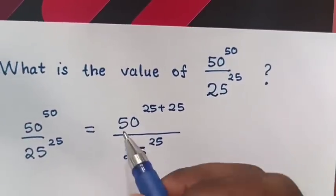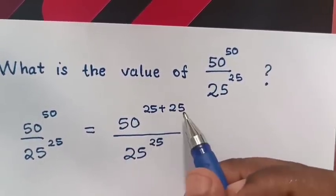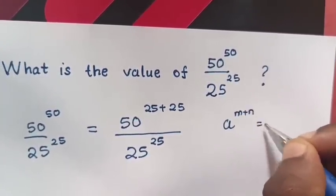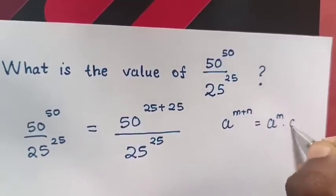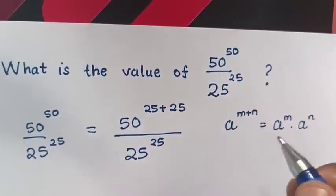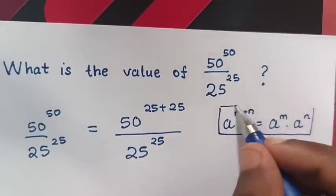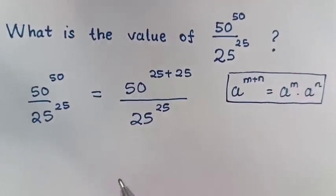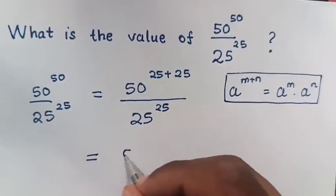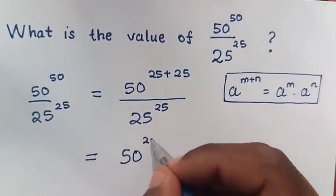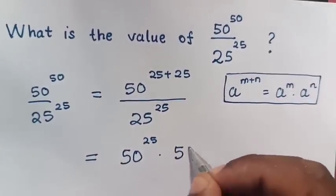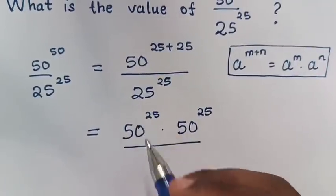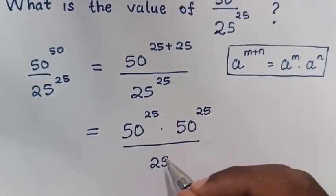From here, 50 power of 25 plus 25 — we apply the rule that a power m plus n is equal to a power m times a power n. So here in our equation, it will be the multiplication of exponents, which will be equal to 50 power of 25 times 50 power of 25, over 25 power of 25.